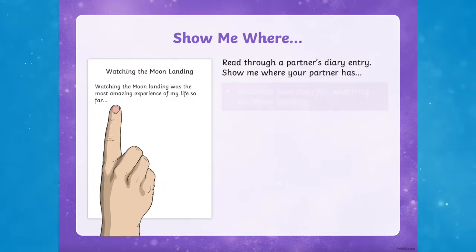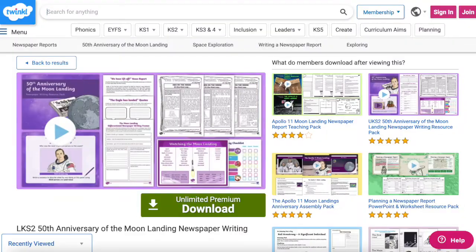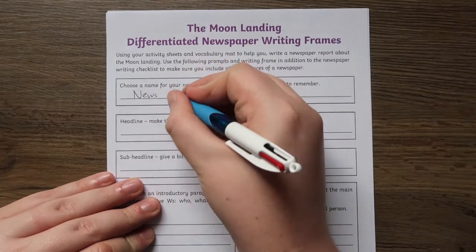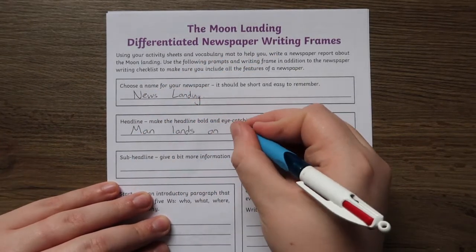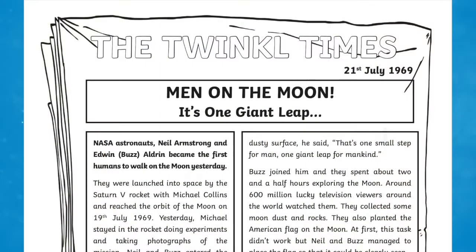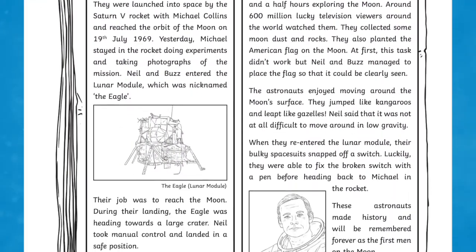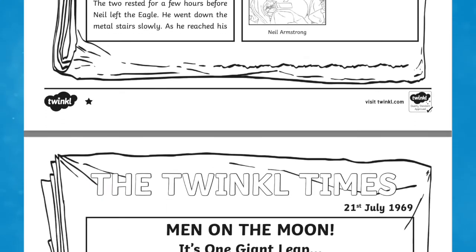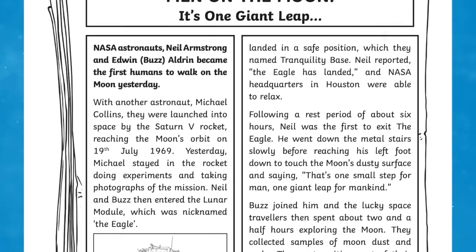Or for Lower Key Stage 2, the Moon Landing Newspaper Writing Resource Pack is another fantastic resource. This pack includes differentiated newspaper writing frames, a word map, differentiated examples of newspaper reports, as well as a PowerPoint including actual recordings of the lift off, as well as the famous quote of Neil Armstrong as he stepped foot on the moon. These are perfect to use in your English lessons during your Space Week.